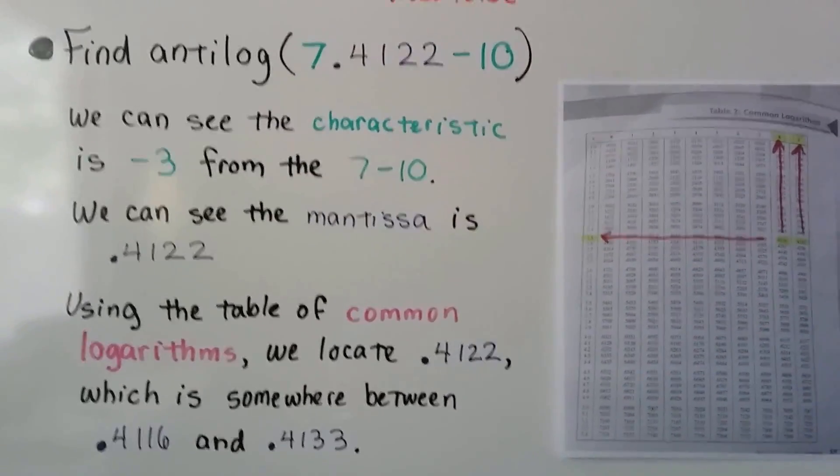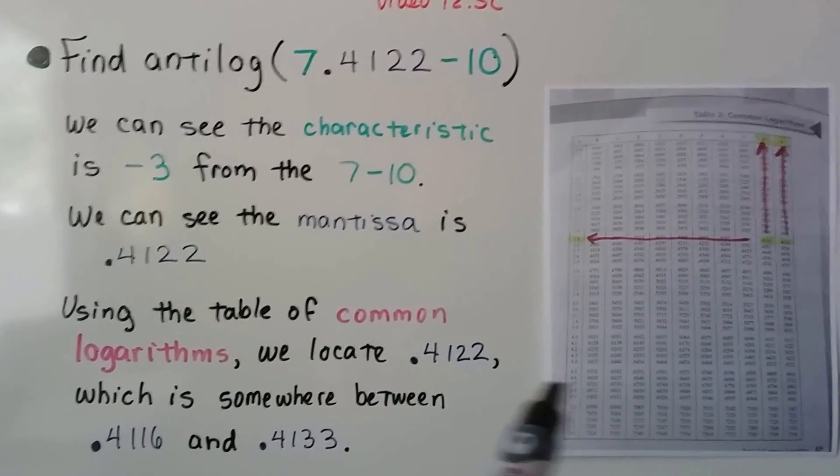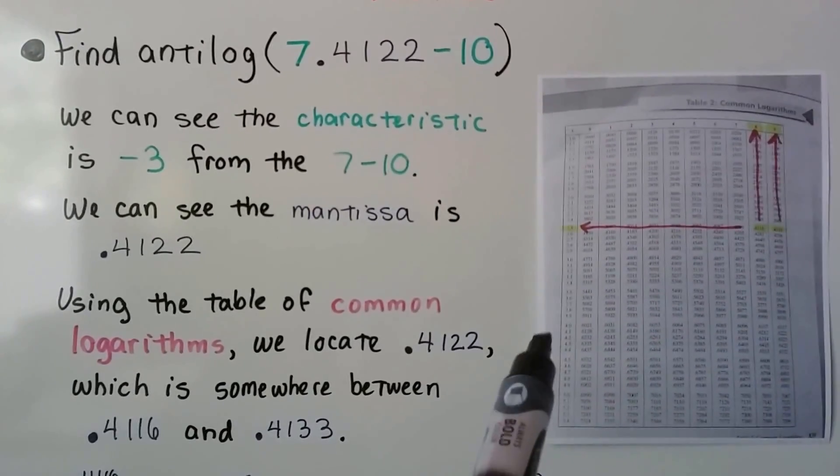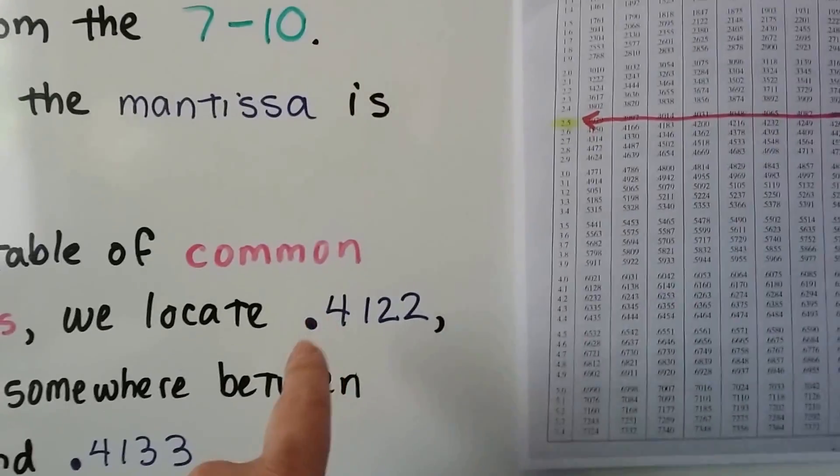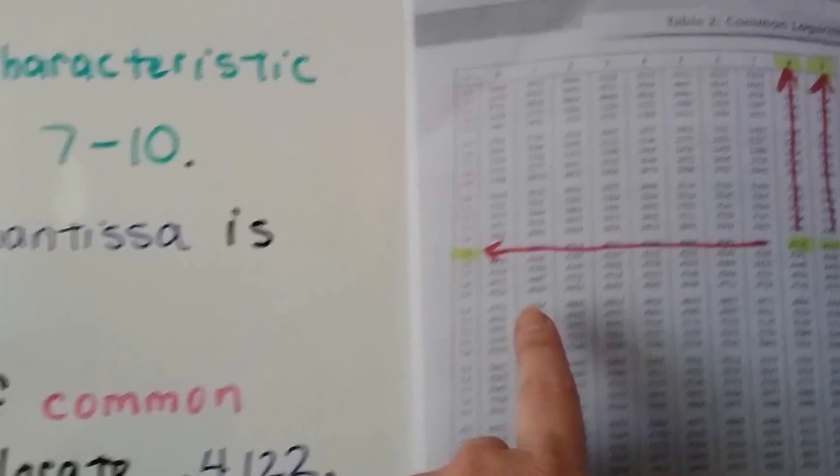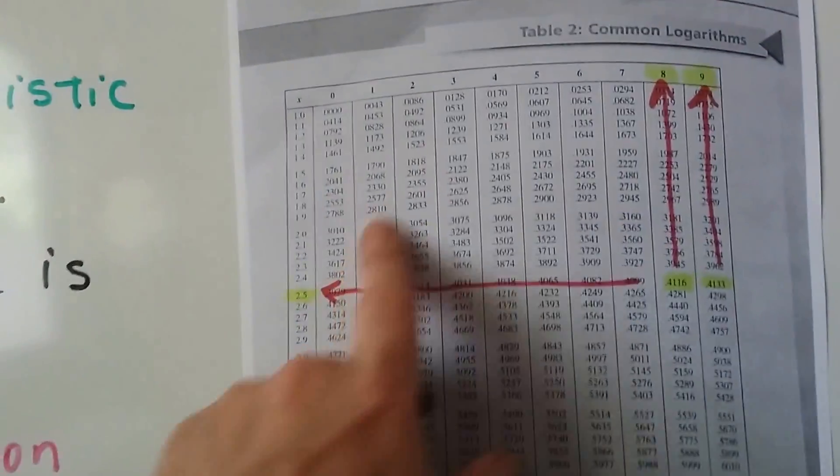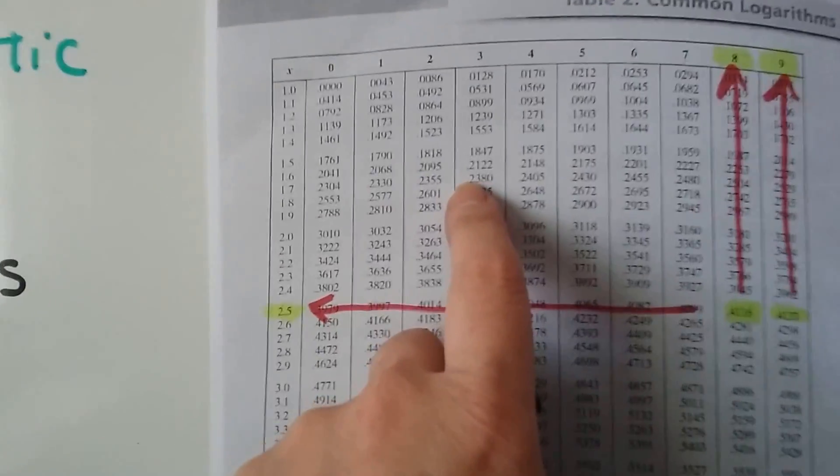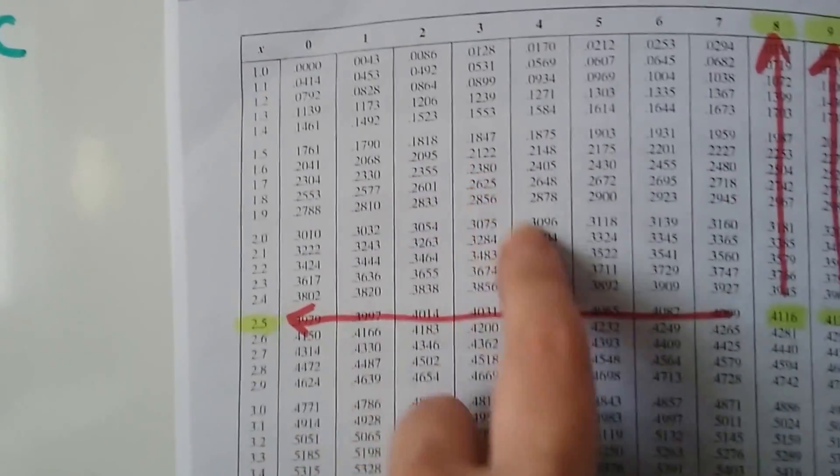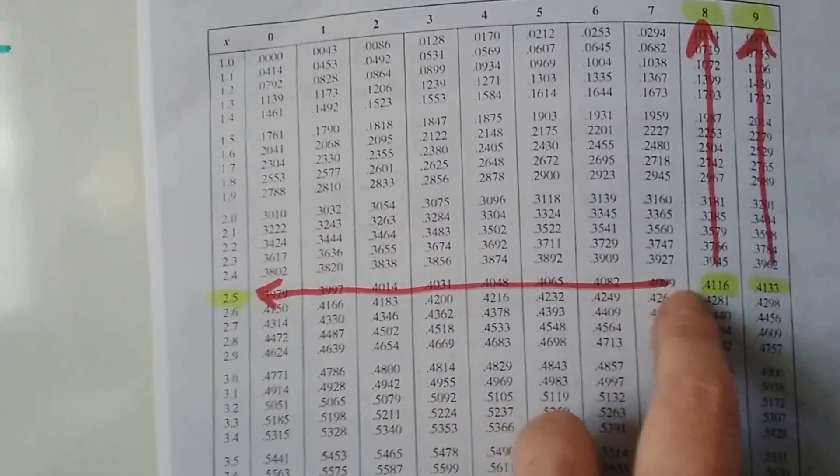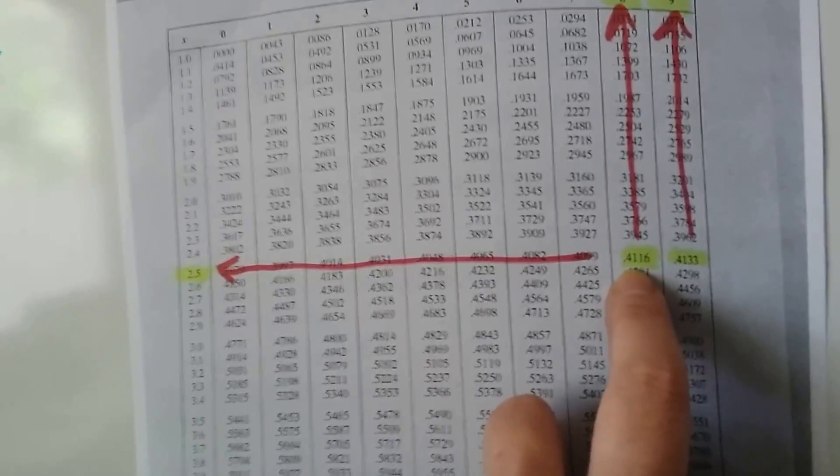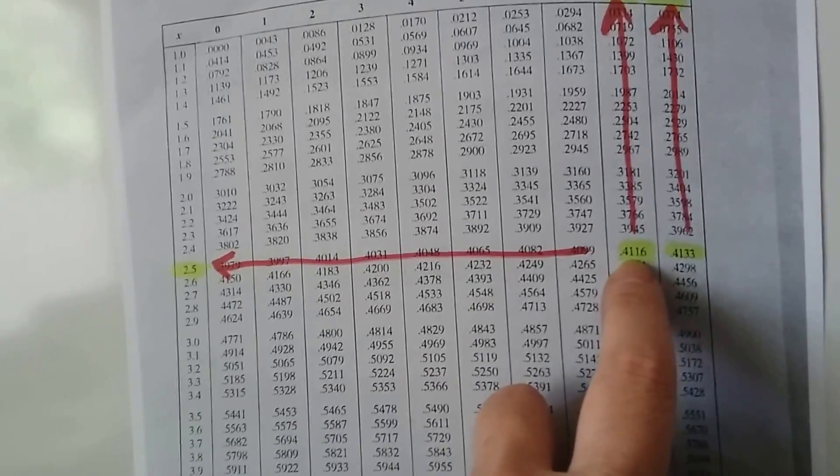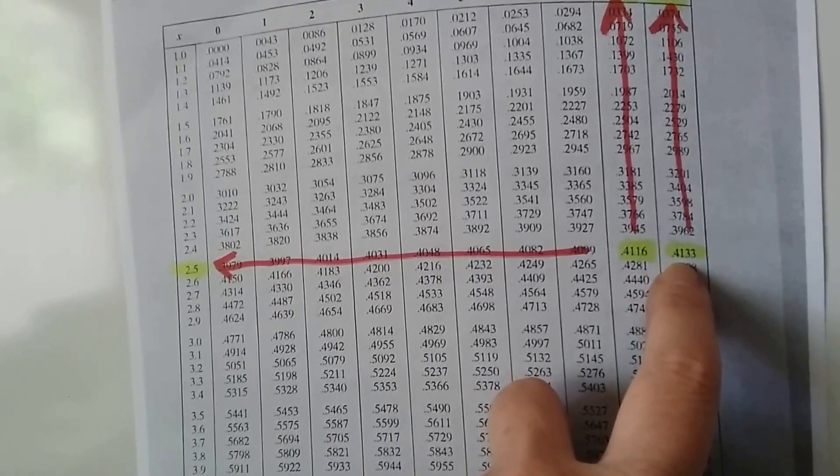And then using the table of common logarithms, we locate .4122. So when we're trying to find the common logarithm, what we do is we look for this .4122 somewhere on here. So you can see here's like .2122, .3729. So when we try to look for .4122, well, here's .4116 and .4133.